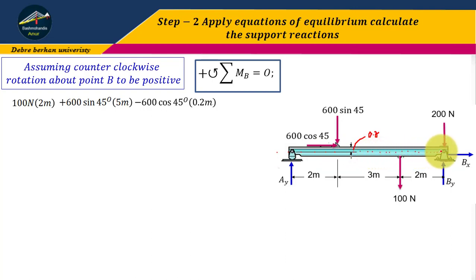The horizontal force is 600 cos 45 degrees, and the direction creates clockwise rotation. Therefore, this equals to negative 600 cos 45 times 0.2 meters.